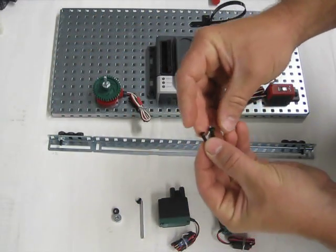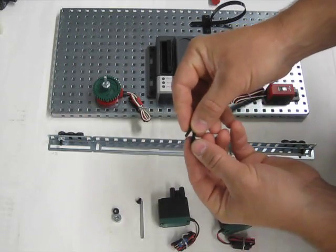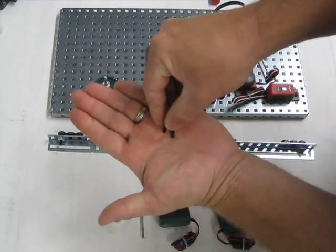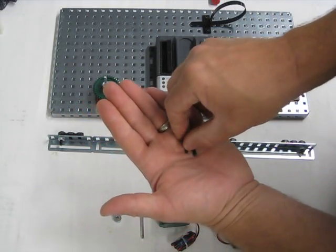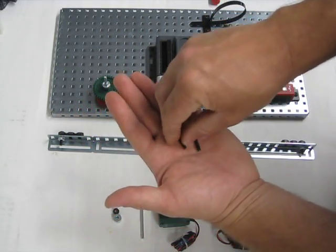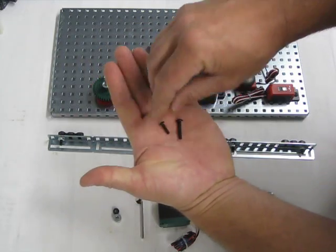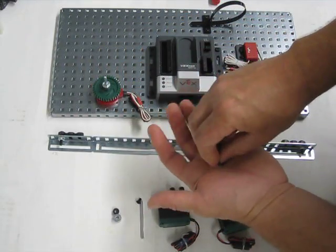And that issue is the screws that come in the VEX kit. So if you look here, this is a regular screw on the right. It's the 832 screw, and then on the left is the screw that fits into the motor.